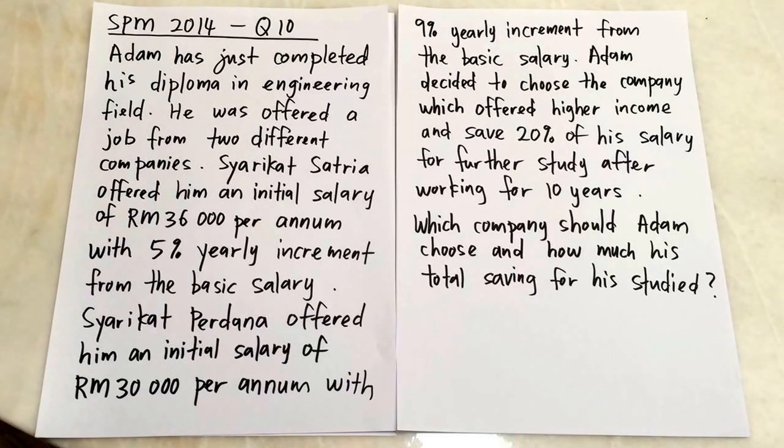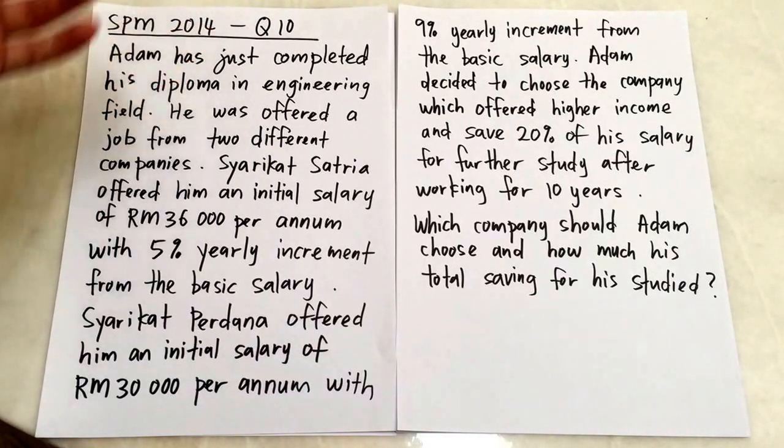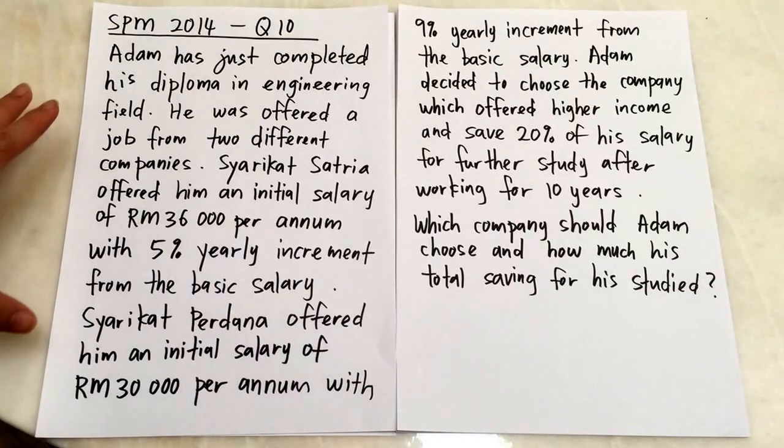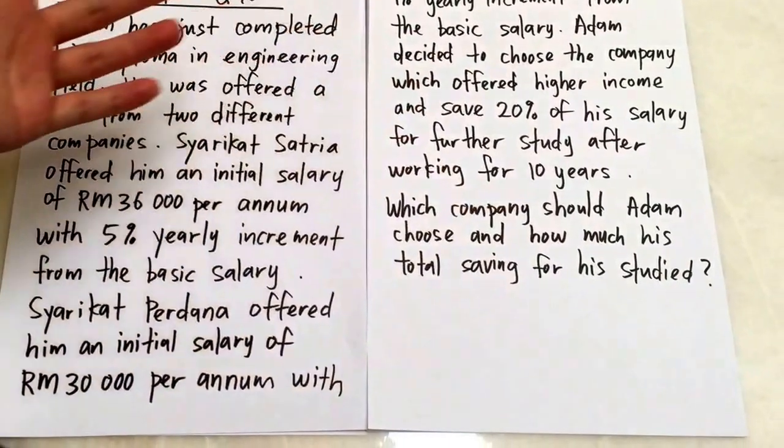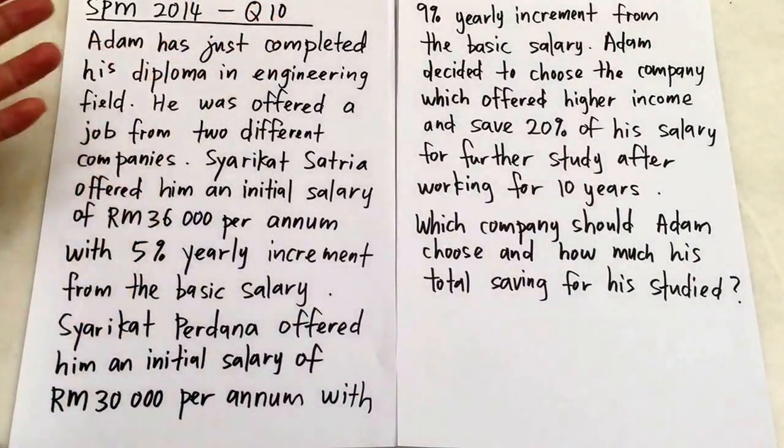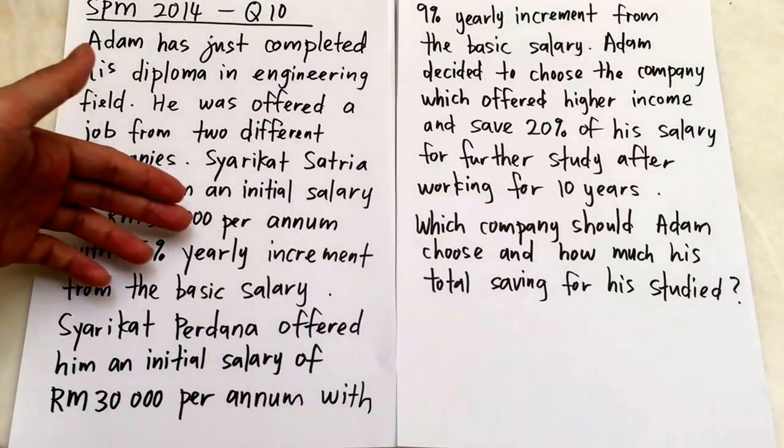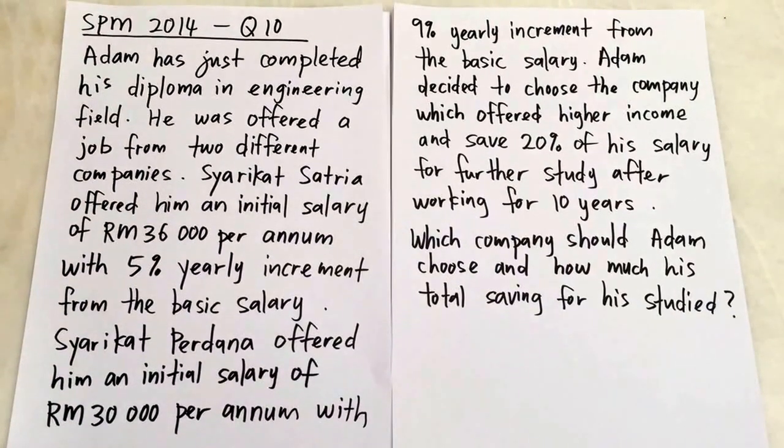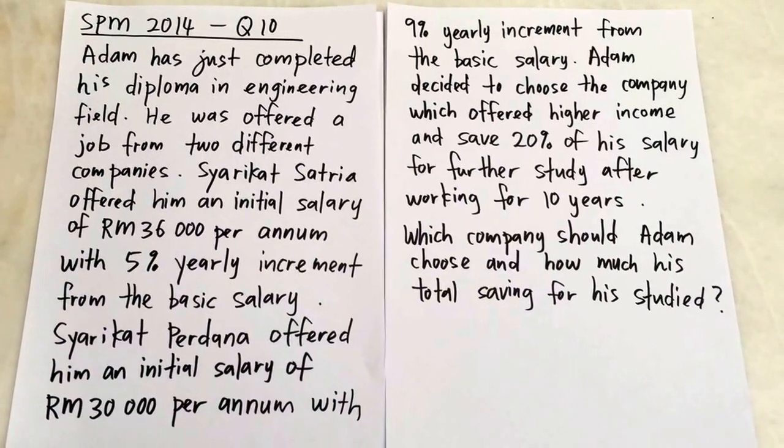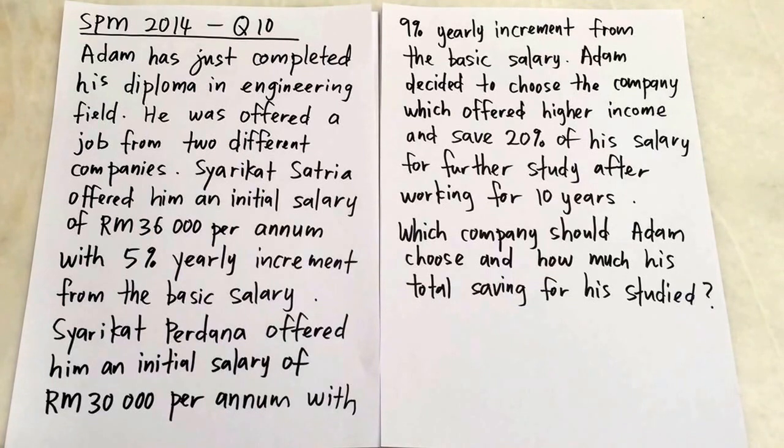Okay, this is Additional Mathematics Paper One for SPM 2014, question number one. This is a progression question. For progression questions, whenever you see something related to salary, most of the time it's geometric progression.